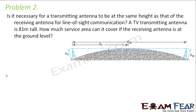Let us look at the next problem. It asks: is it necessary for a transmitting antenna to be at the same height as that of the receiving antenna for line of sight communication? Let us first look at what we mean by line of sight communication. Line of sight generally means the line drawn from our eyes to an object. In communication, it means there is no obstruction between the transmitter and the receiver — so that is known as line of sight communication.